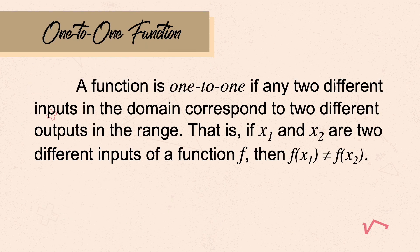Now let's go to the proper discussion: the one-to-one function. A one-to-one function is a type of function wherein any two different inputs in the domain correspond to two different outputs in the range. That is, if x₁ and x₂ are two different inputs, then f(x₁) must not equal f(x₂). In other words, every x must correspond with one unique y.